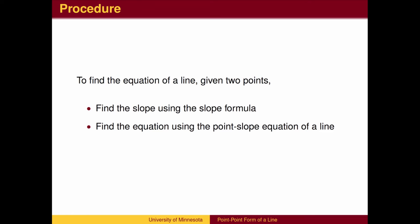To recap, the procedure to find the equation of a line given two points is as follows. First, use the slope formula to find the slope. Then, use either point in the point-slope formula.